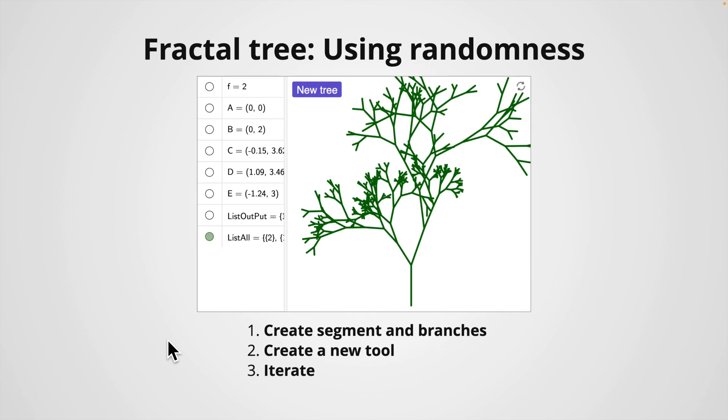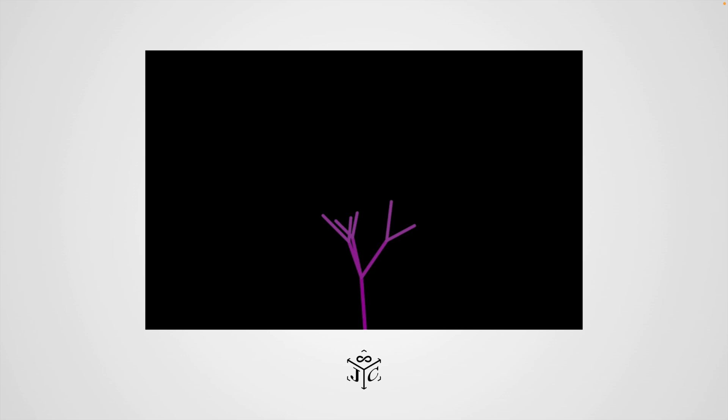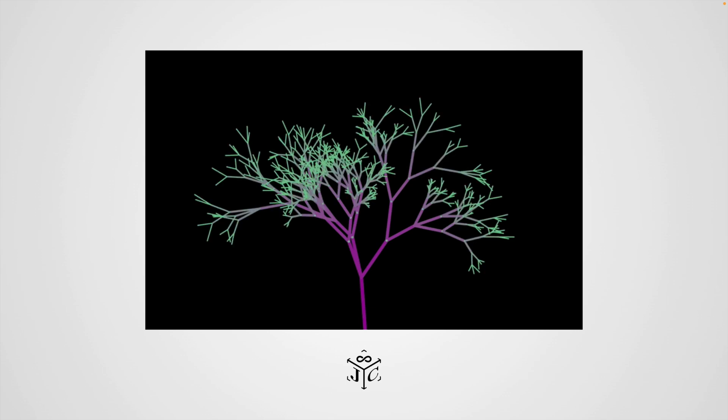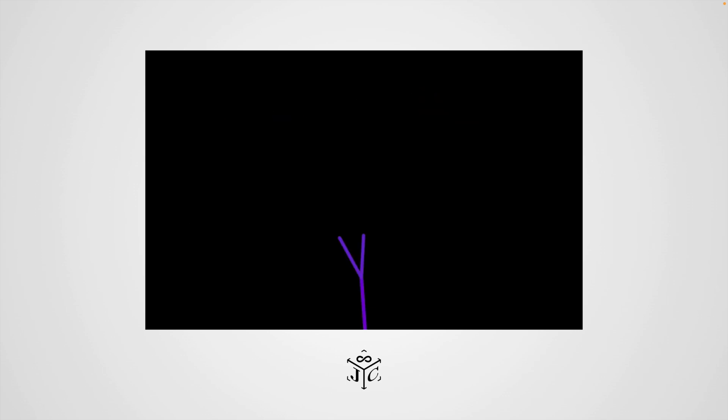We can follow the same steps as we did in our basic example to create more amazing fractal trees. That is, create a segment and branches, create new tools, and finally iterate. Also, as we did in our basic example, we can modify the thickness and change the color. The results are outstanding as you can see here.